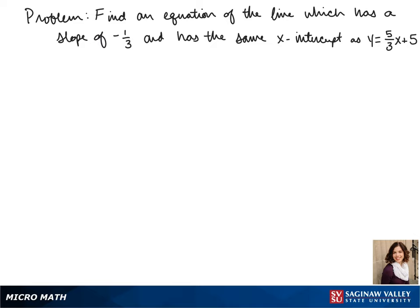Welcome to another day of algebra. Today we'll be finding an equation of the line which has a slope of negative one-third and has the same x-intercept as y equals five-thirds x plus five.